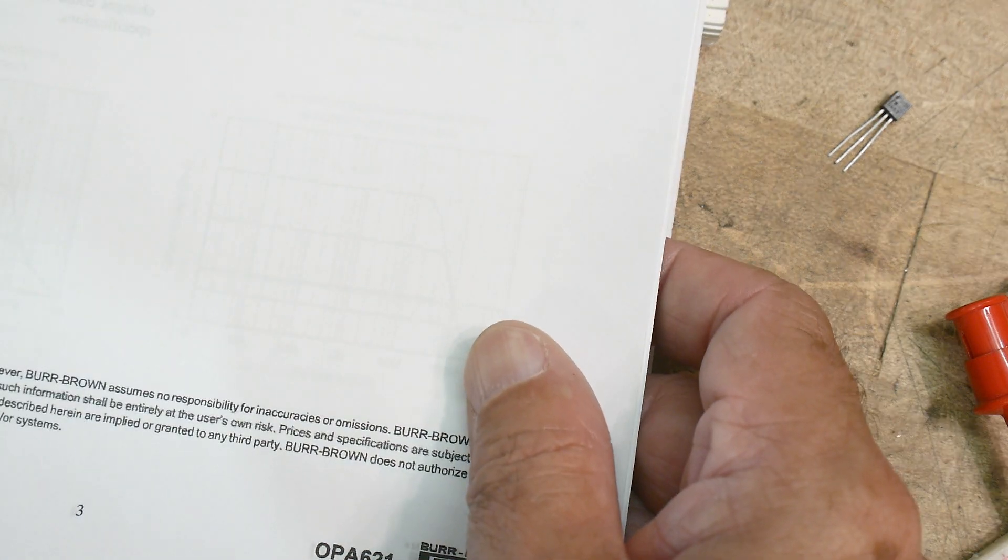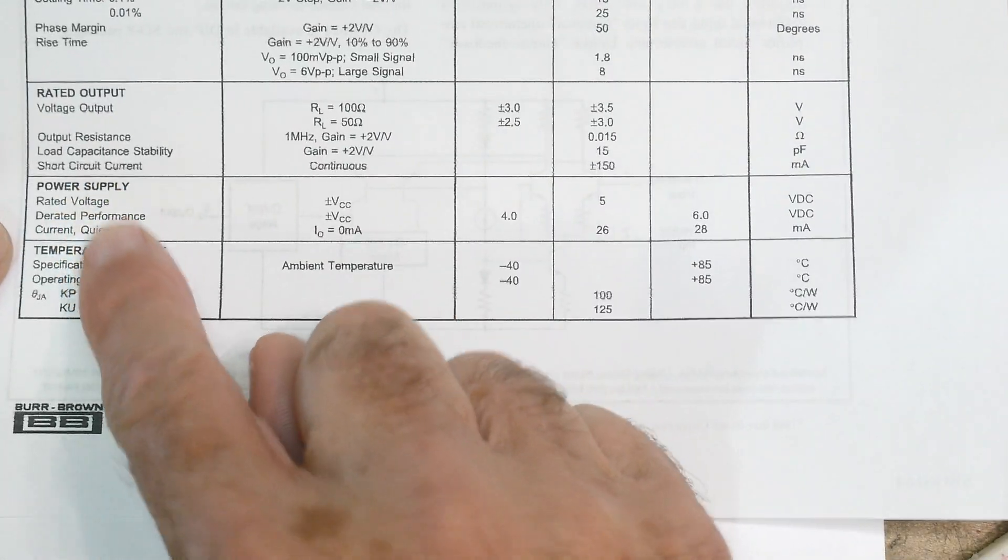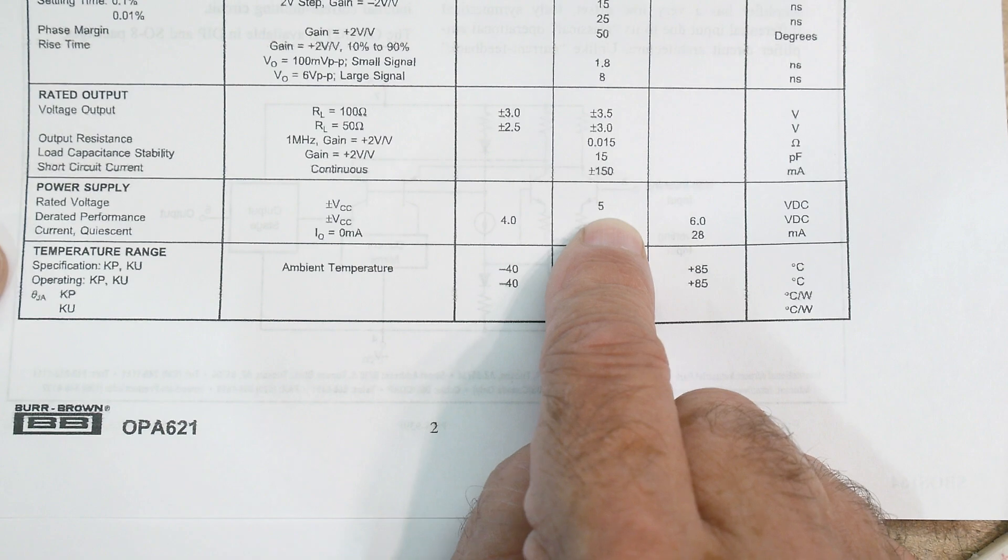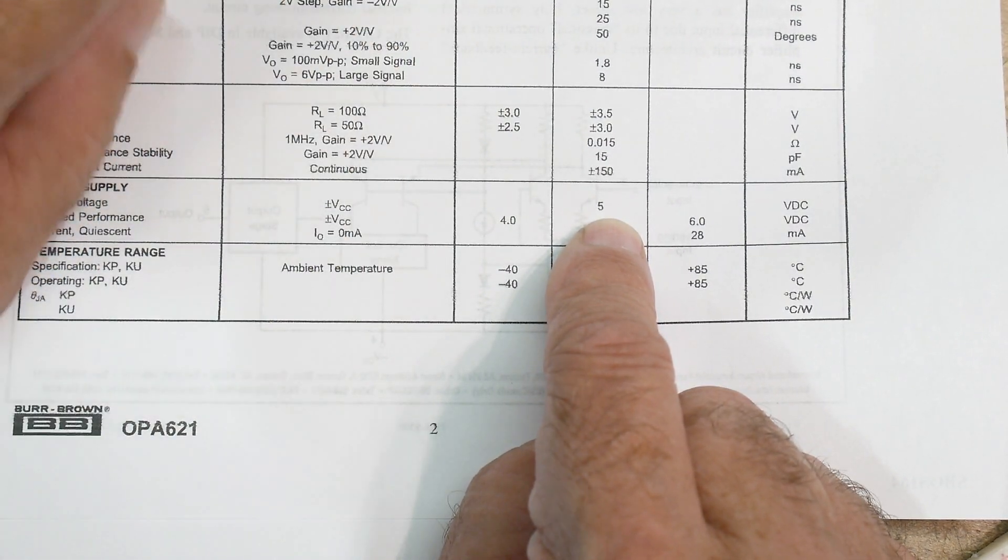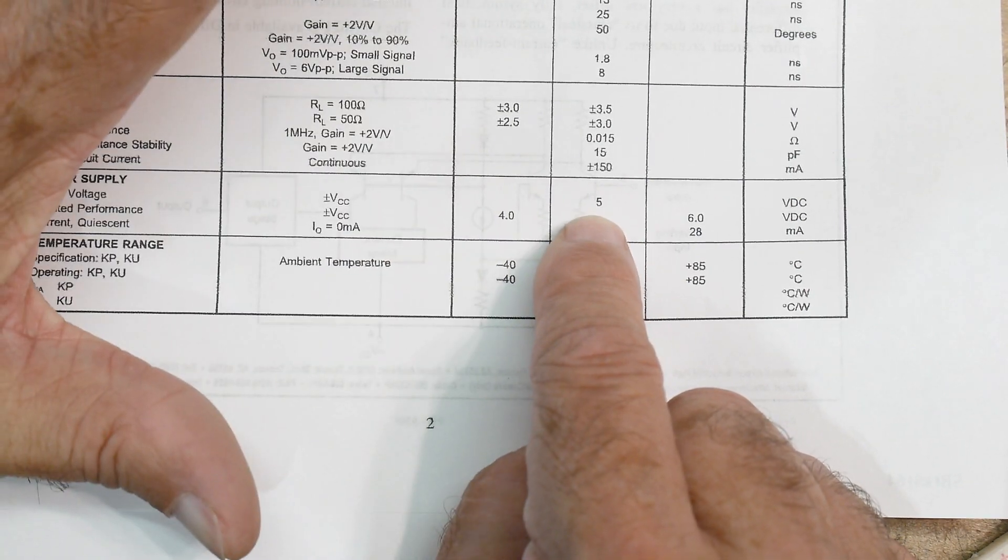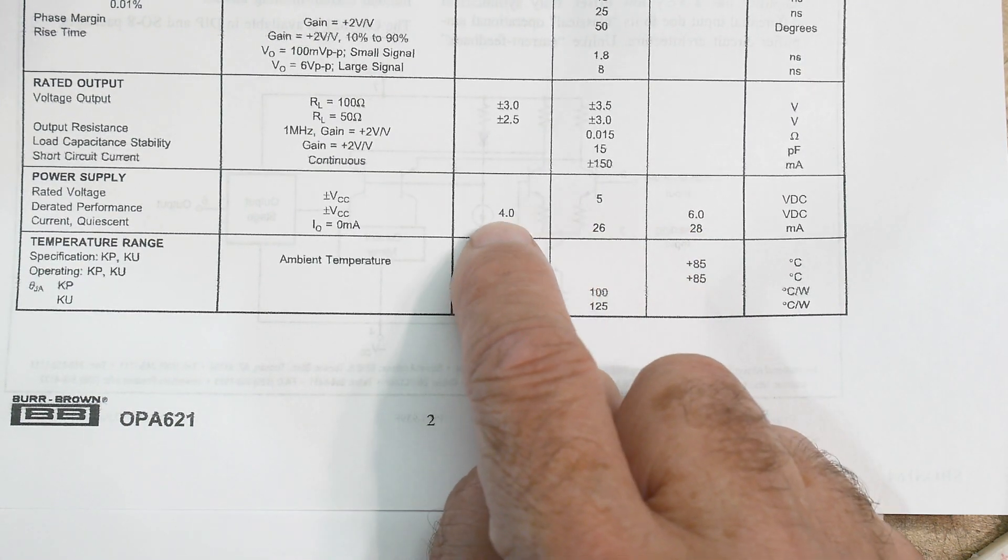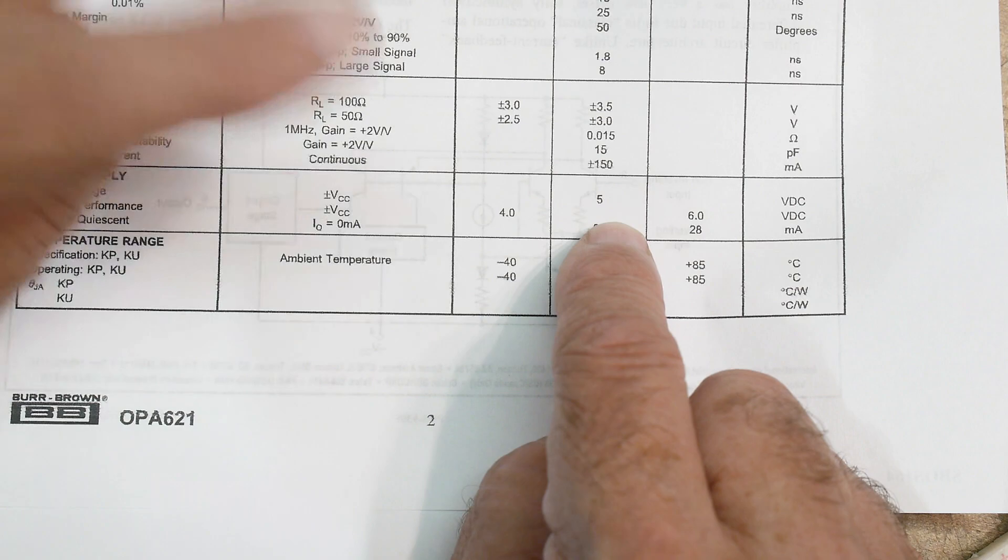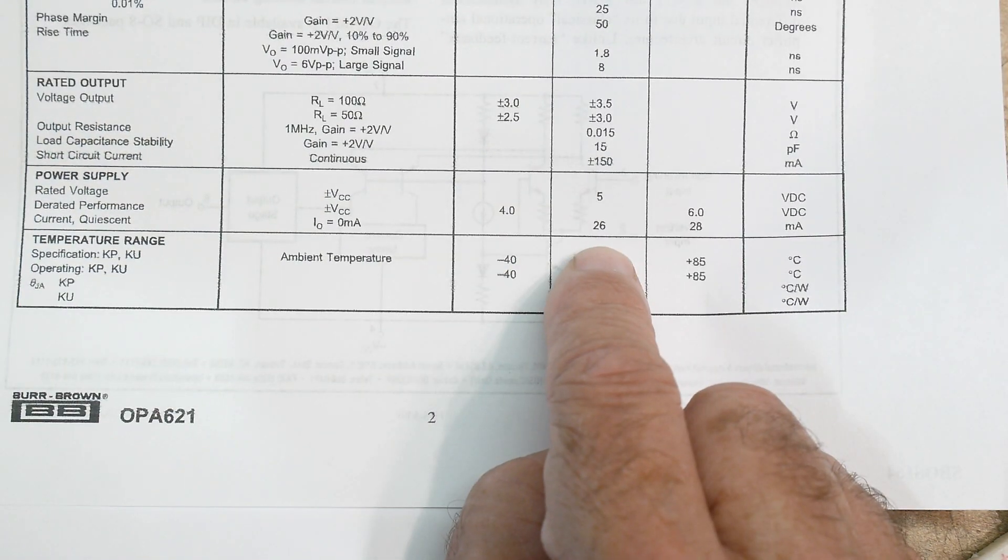But if you read the data sheet, the power supply is five volts—plus and minus five volts. No more. The absolute max is six volts and the absolute min is four volts. Run it at plus and minus five volts. It's a bit power hungry with quiescent current of 26 milliamps.